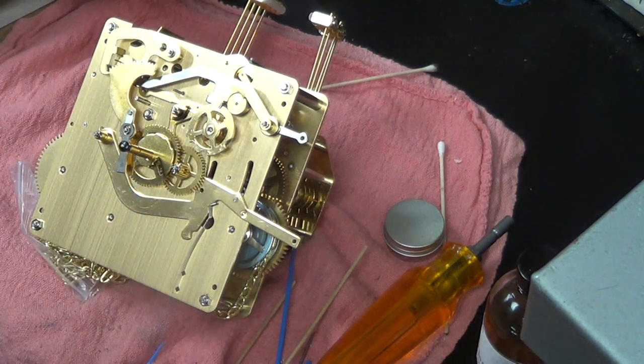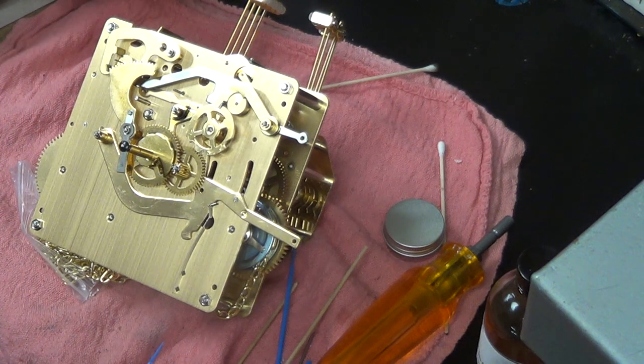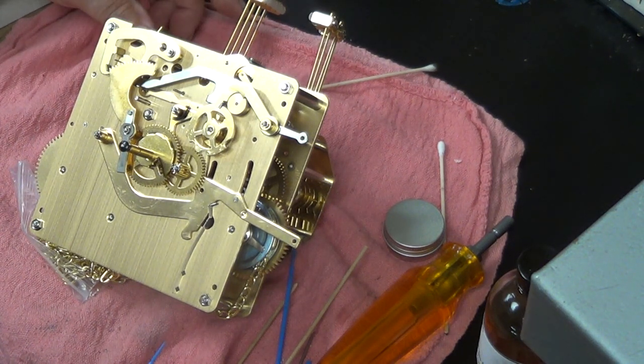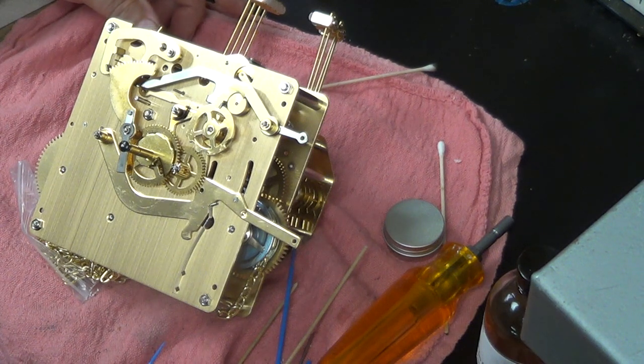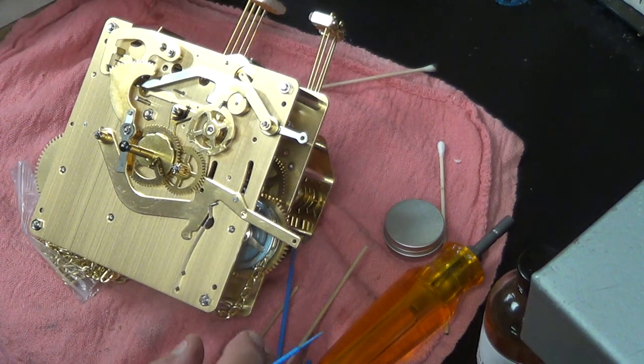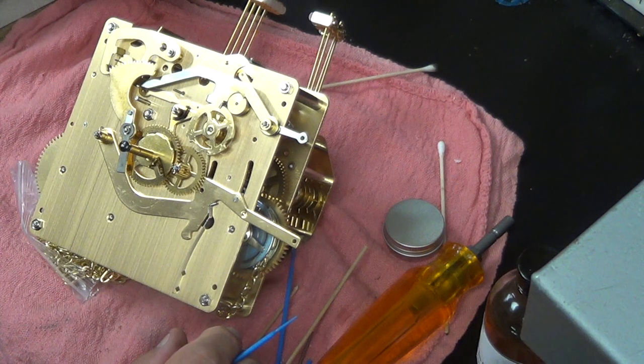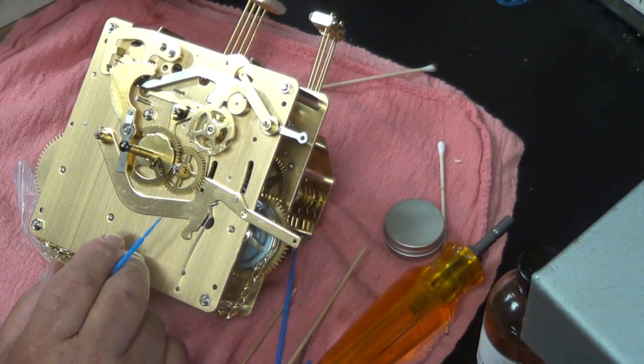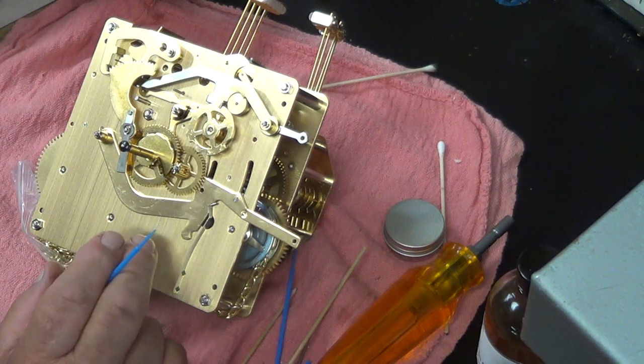Somebody had gotten in there and used a threaded tool and cut the pivot holes out and put threaded bushings in and I'm not a fan of them. Now you can't do anything but use the threaded bushing and if it's bad you gotta take the old one out and they peened it in. So it had seen its better days.